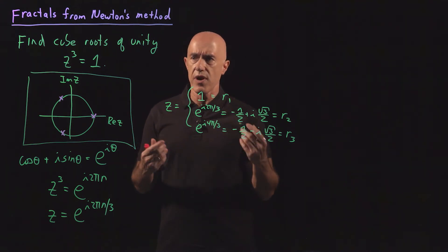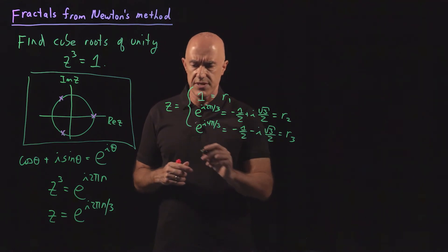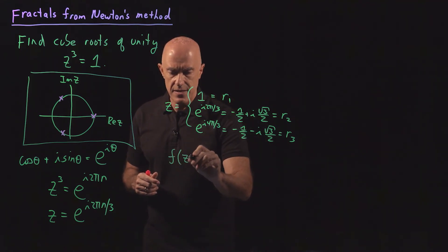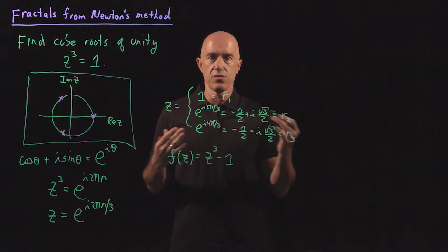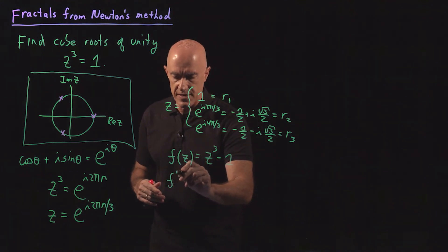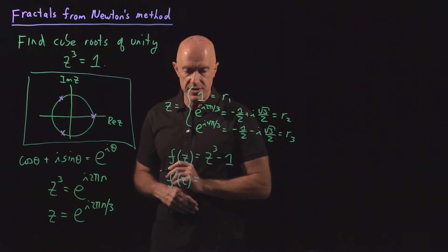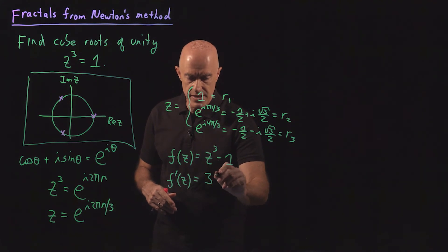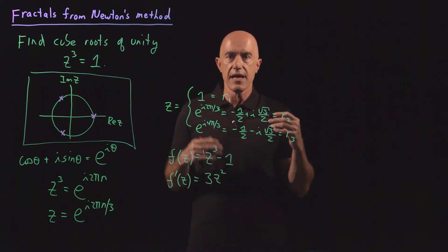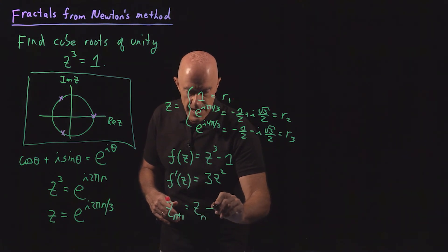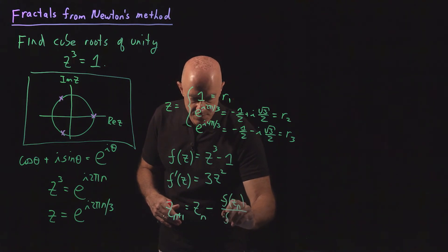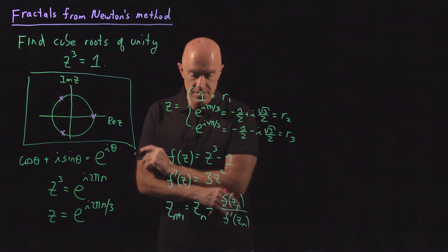We have to solve an equation f of z equals 0. Here f of z is equal to z cubed minus 1. To implement Newton's method, we need the derivative. The derivative of a polynomial is very simple, that's 3z squared. And Newton's method is the iteration z n plus 1 equals z sub n minus f of z sub n over f prime of z sub n.